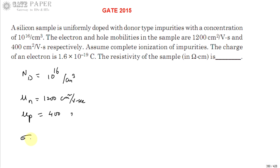Silicon is uniformly doped with donor type impurities, so it will become n-type. We are going to calculate resistivity. Resistivity of n-type can be treated as reciprocal of conductivity of n-type.